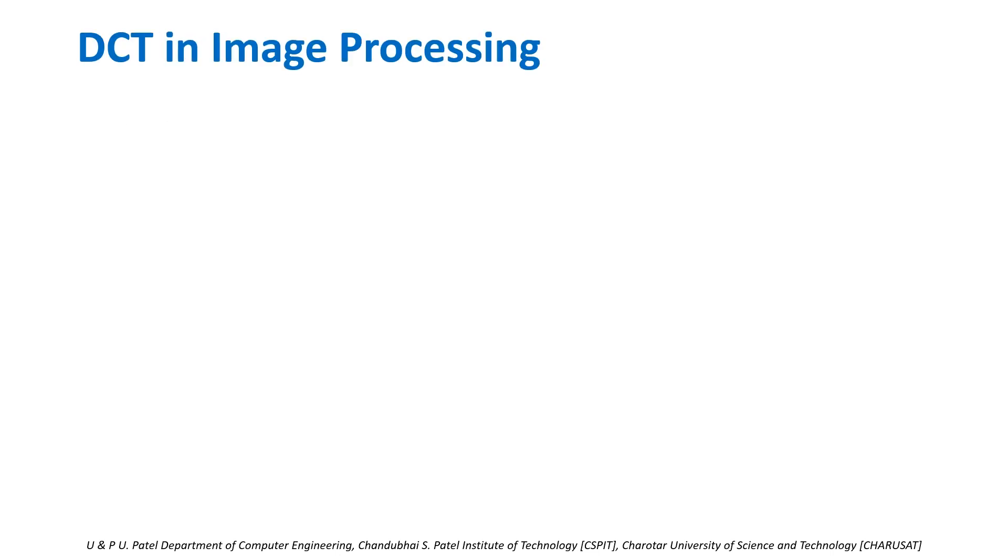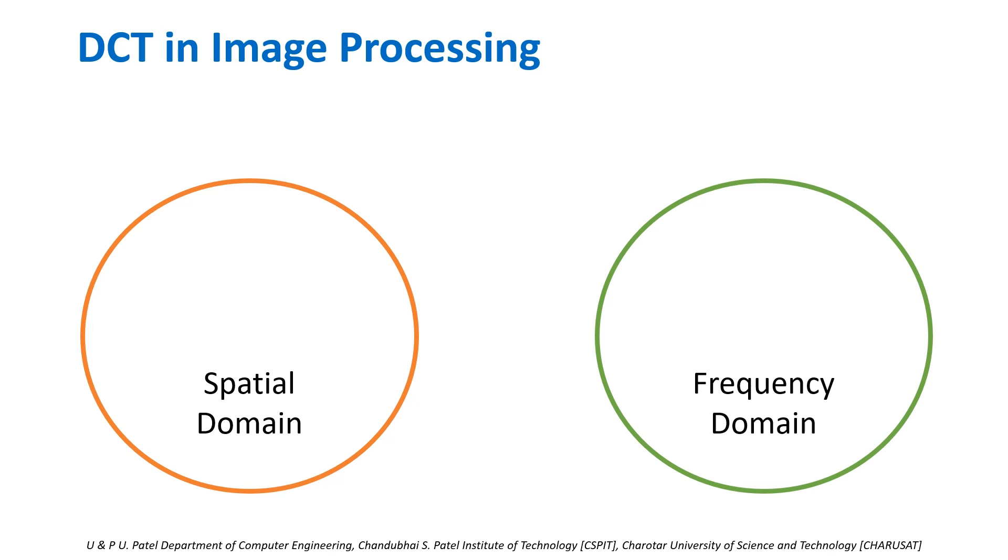DCT in image processing. In image processing, we have two domains: spatial domain and frequency domain. Let f be the image in spatial domain and F be the image in frequency domain.